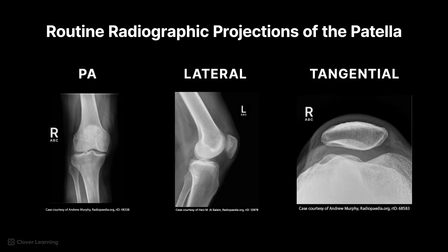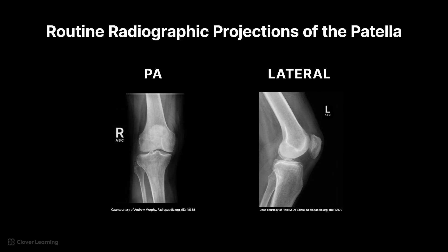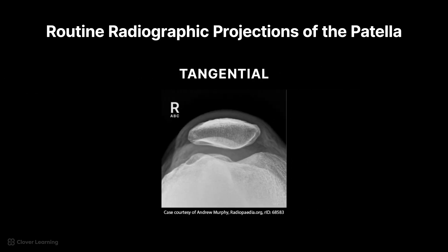The routine radiographic projections of the patella include PA, lateral, and tangential. PA or posteroanterior means the central ray enters the posterior portion and exits the anterior portion. For the patella, this means the patient must be in a prone position. Similar to the knee, the lateral patella is a mediolateral projection with the central ray entering the medial portion and exiting the lateral portion. In tangential projections, the central ray skims the curved surface of a part to project it free of superimposition. For the patella, the point is to project the patella and intercondylar sulcus in profile, free of superimposition with an open patellofemoral joint.